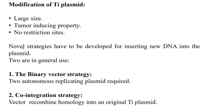The first strategy is the binary vector strategy, which uses two autonomous replicating plasmids that complement each other. One plasmid contains the T-DNA for transfer and the other helps in the transmission. The second is the co-integration strategy, which uses vectors that recombine by homology into an original Ti plasmid — a small E. coli plasmid integrates its sequences that share homology with the large Ti plasmid to insert the gene of interest into the plants.